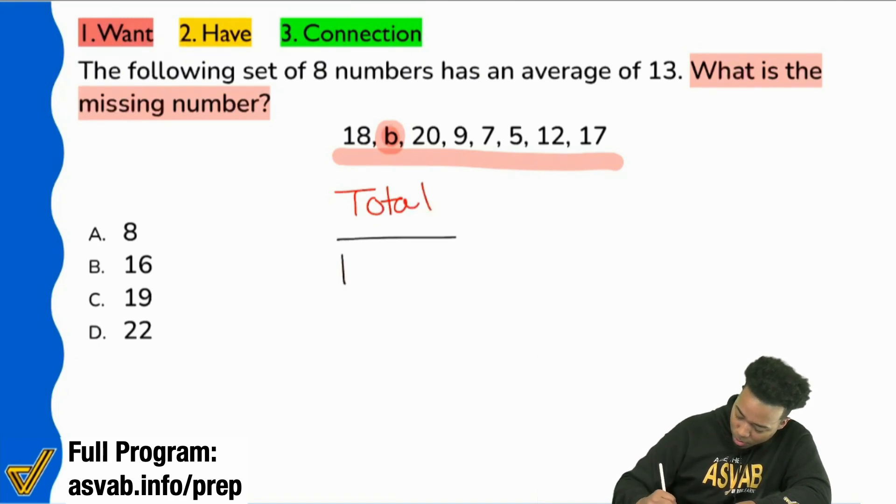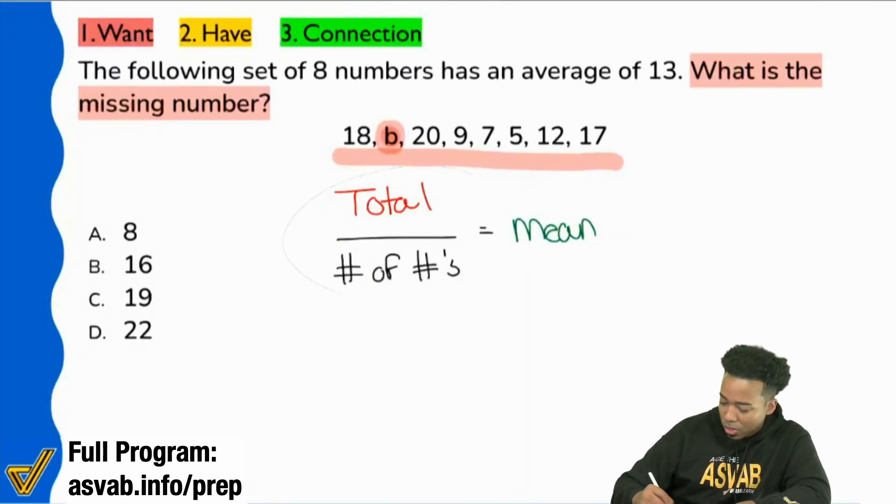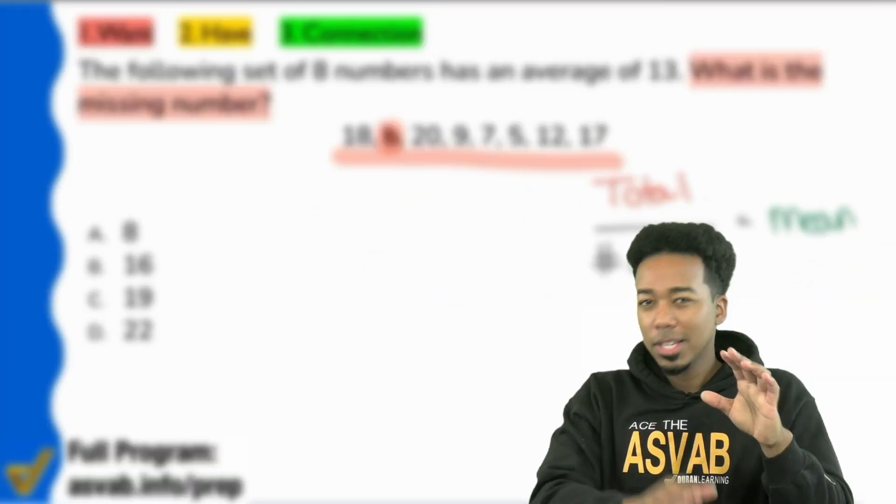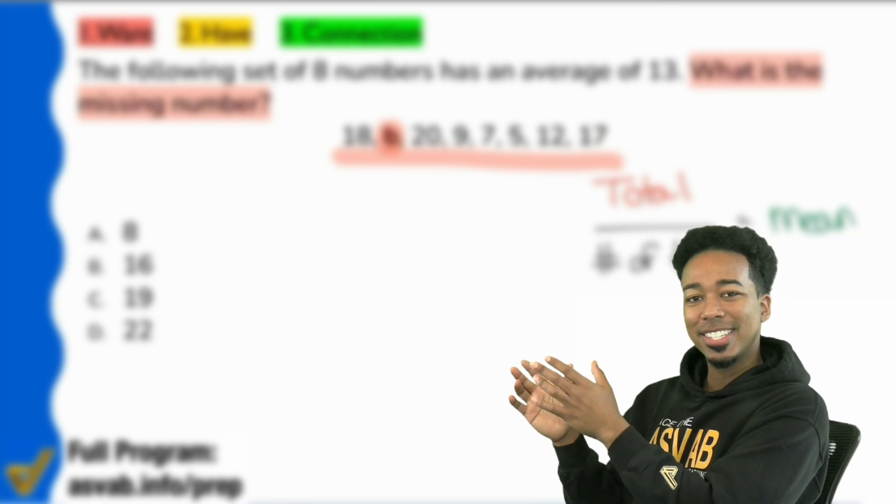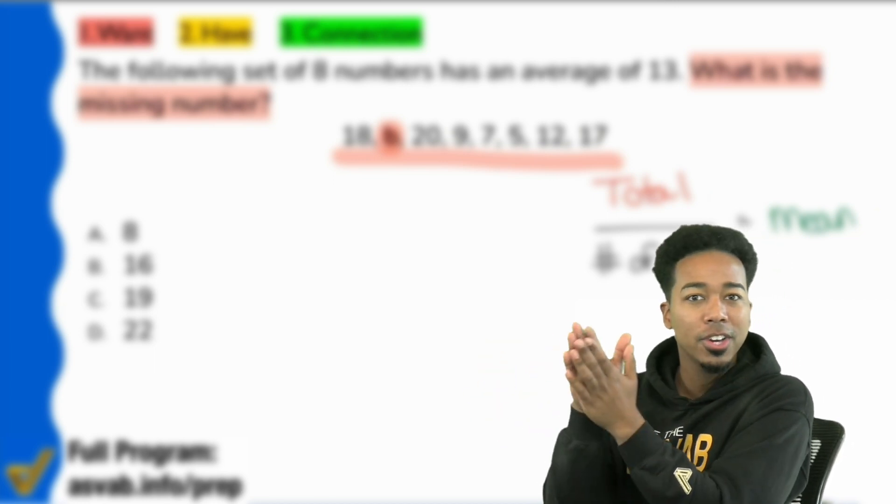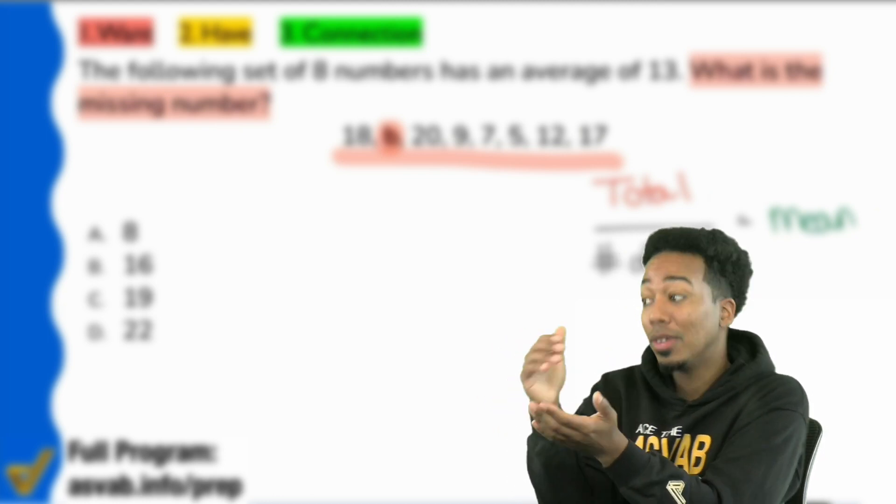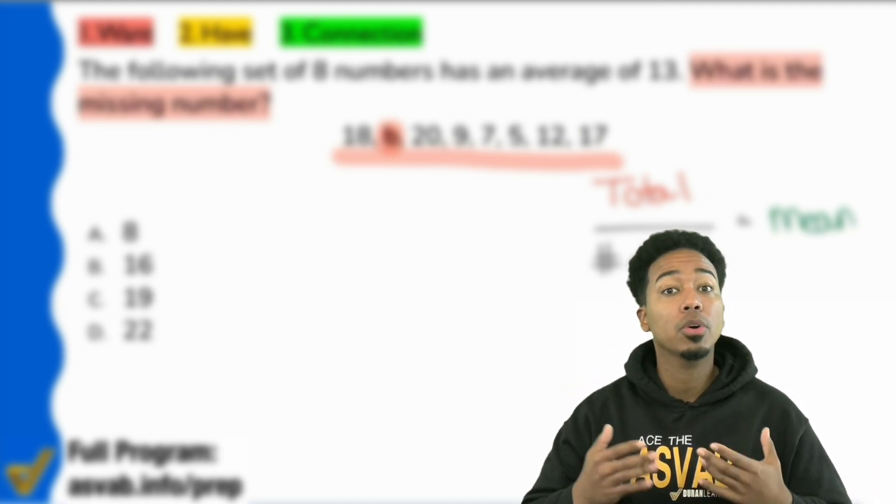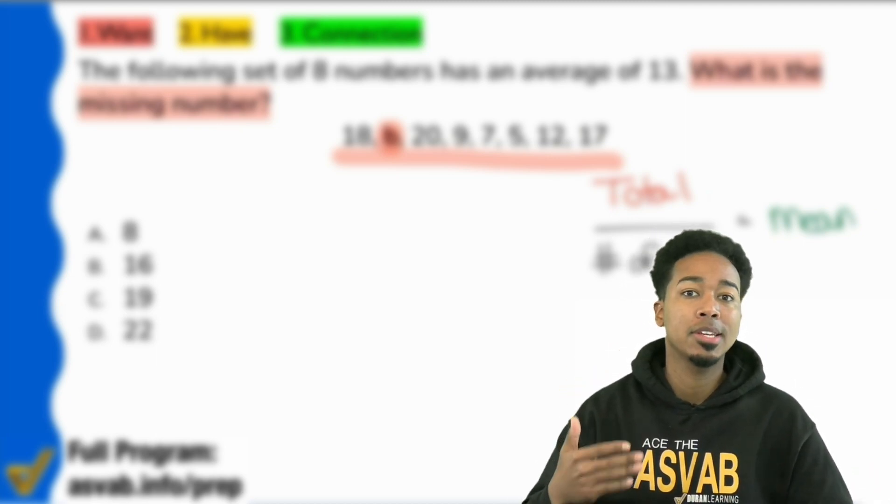Total divided by the number of numbers equals our mean. And let's go ahead and see what we're going to write down. Everybody, we can find the total if we had the missing number. So we'll leave that as is for now. Let's pause really quick because my question is, regardless of whether you think this question is easy or hard, are you prepared to answer more like this? Do you understand everything you need to know leading up to this, like fractions, decimals? All of these questions that I'm asking you are legitimate questions that every successful ASVAB test taker needs to ask themselves.